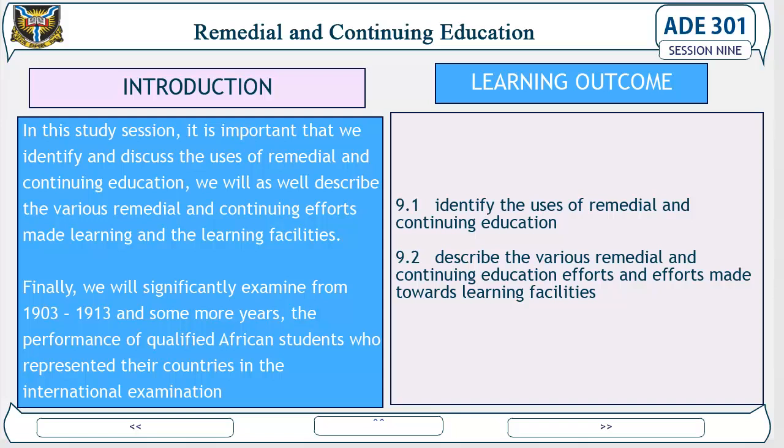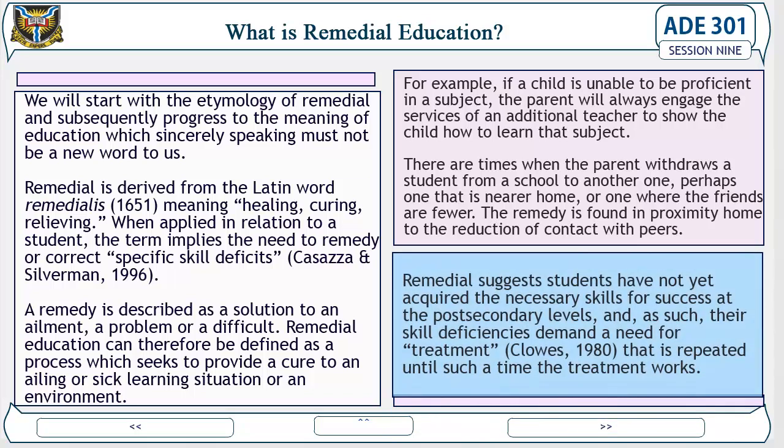What is remedial education? We will start with the etymology of 'remedial' and subsequently progress to the meaning of education, which must not be a new word to us. 'Remedial' is derived from the Latin word 'remedialis' (1651), meaning healing, caring, relieving. When applied in relation to a student, the term implies the need to remedy or correct specific skill deficits — Cassaza and Silverman, 1996. A remedy is described as a solution to an ailment, a problem, or a difficulty.